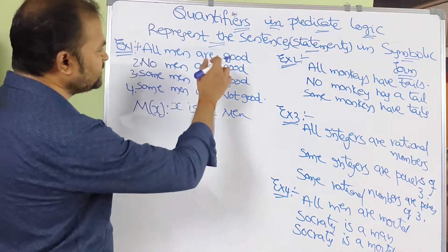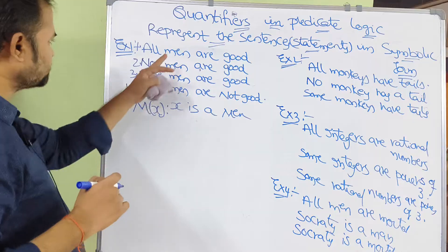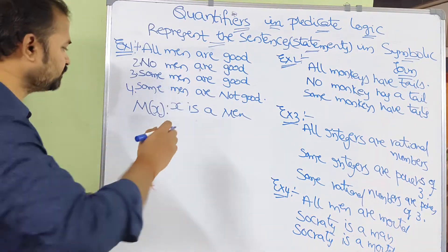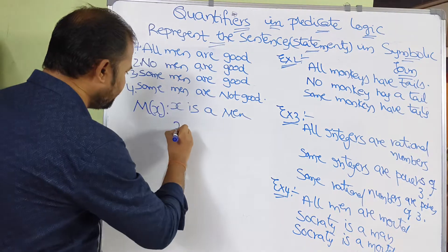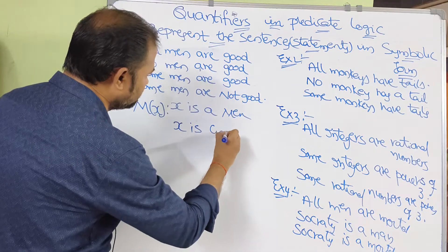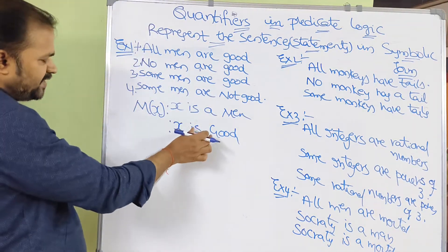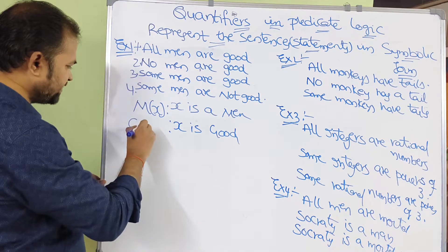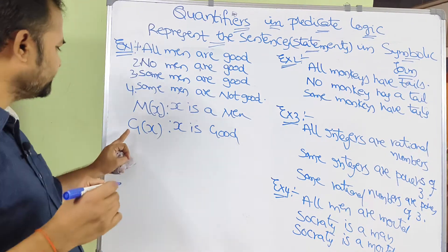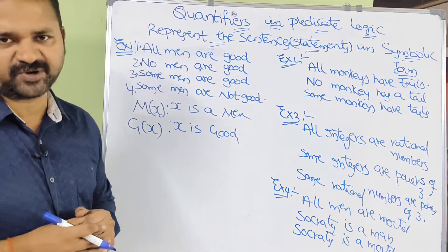The second predicate is 'good'. For 'X is good', since good starts with G, we represent this predicate with the proposition function G(x). This X is the subject or variable.